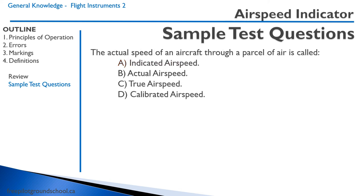Second question: The actual speed of an aircraft through a parcel of air is called — A, indicated airspeed? That's not correct, because that is what the airspeed indicator indicates. B, actual airspeed? No, that term doesn't exist. C is the correct answer: true airspeed — it is the true airspeed through the air. Calibrated airspeed is the indicated airspeed corrected for position error.